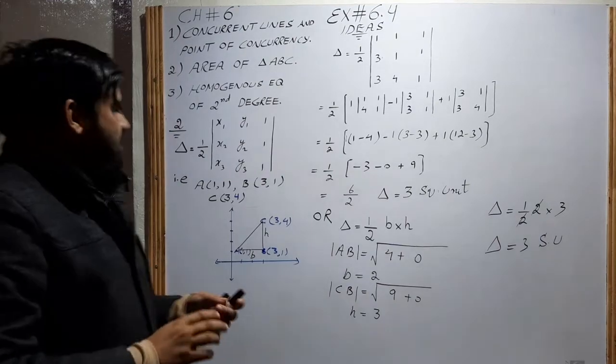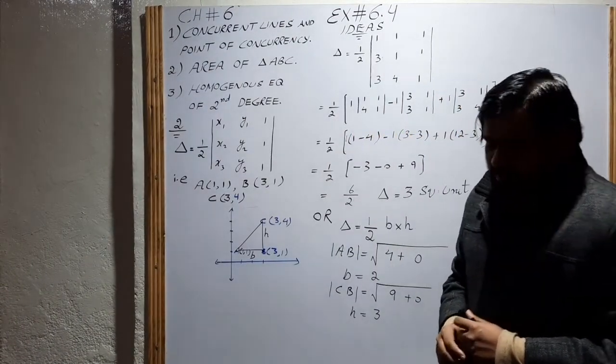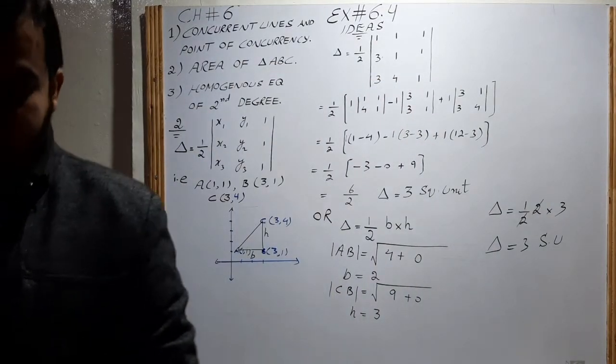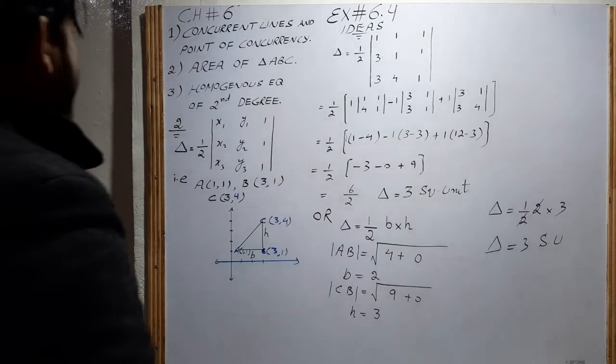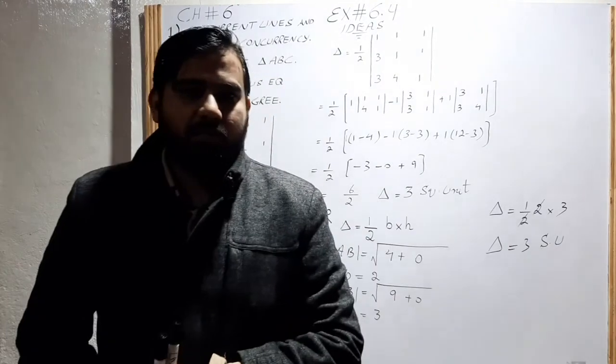But in case of analytic geometry we prefer this formula because it is valid for whether the triangle is right or oblique. But it is particular for the right angle. Next time inshallah we will discuss the homogeneous equation of second degree, quadratic homogeneous equations. This is all about the area of a triangle. Thank you very much. Allah Hafiz.